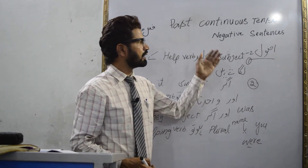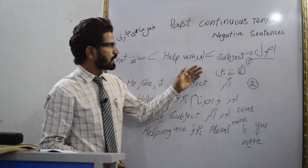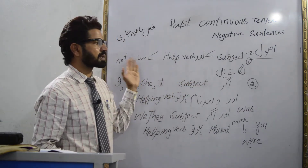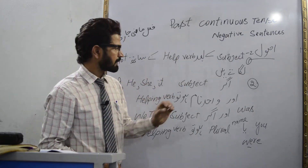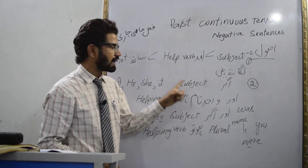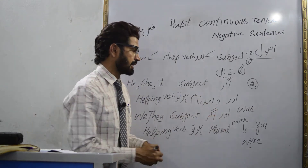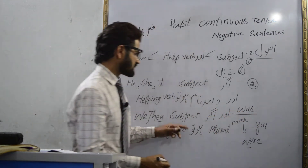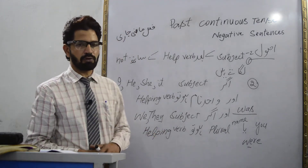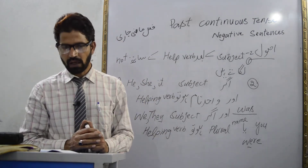Is it clear? Negative sentence banane ke liye ye baat yaad rakhiyega: subject ke baad helping verb ke saath 'not' lagaate hain. Agar subject he, she, it, singular name, aur I ho, to helping verb 'was' istemaal hota hai. Aur agar subject we, they, you, or plural names ho, to helping verb 'were' istemaal hota hai.